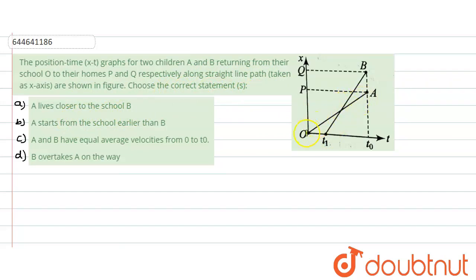So this is the path for B and this is for A. Now they are returning from their school, so school is at O and their homes are at position P and Q respectively.